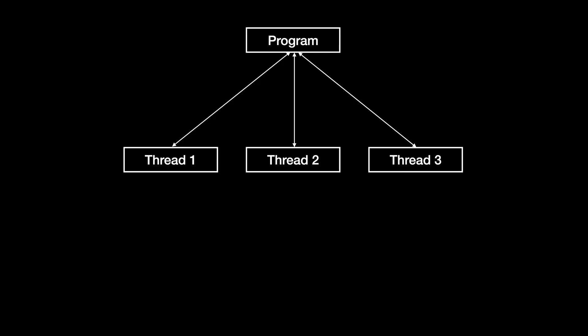Suppose you have two variables x and y which are shared between two threads. Thread one writes x equals one and y equals one. Thread two, however, reads y then reads x.